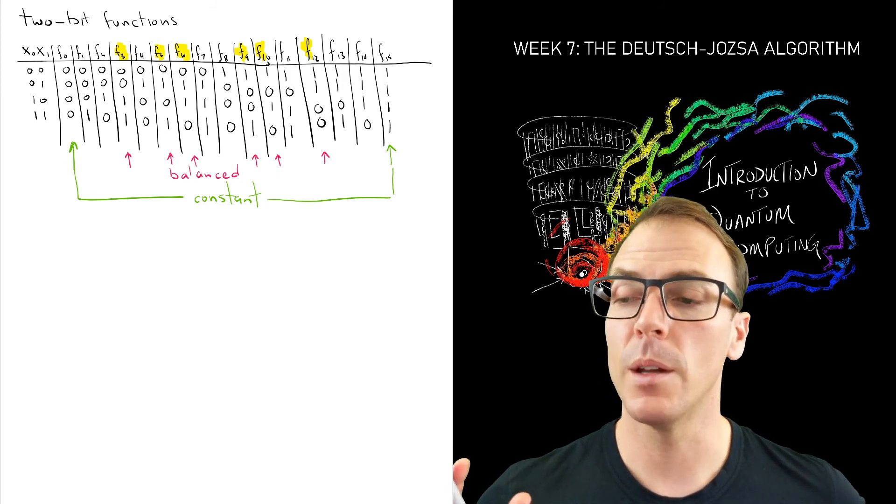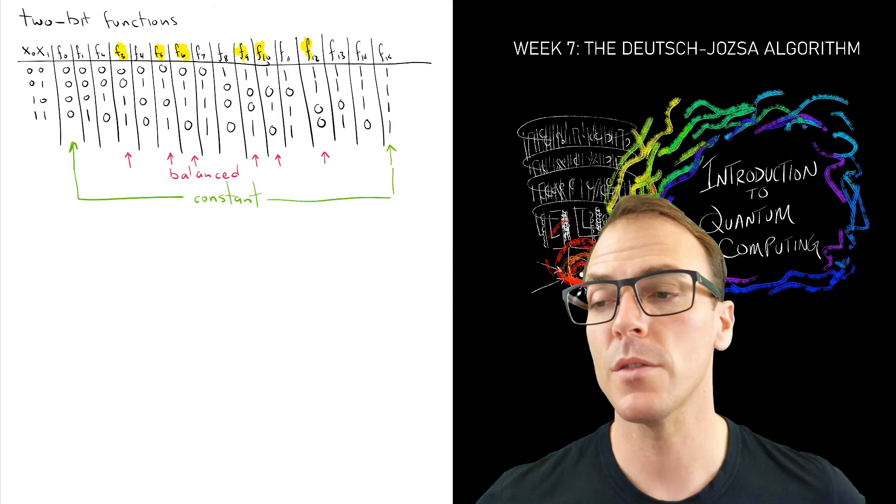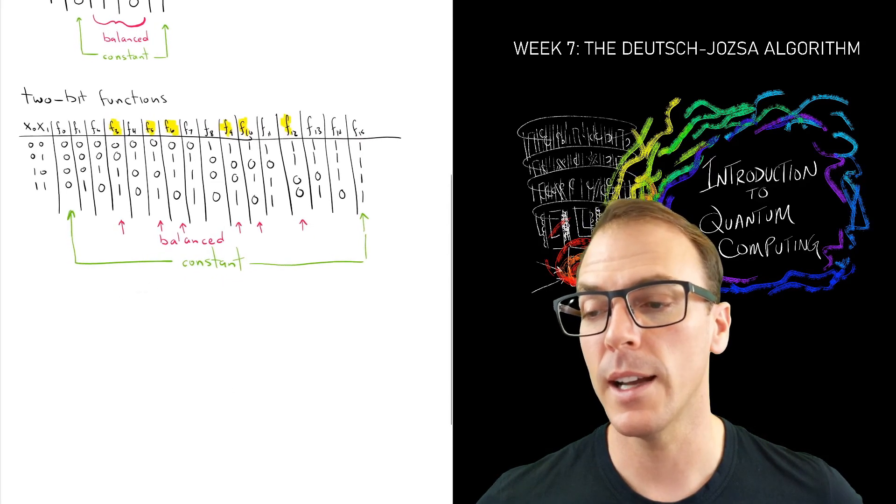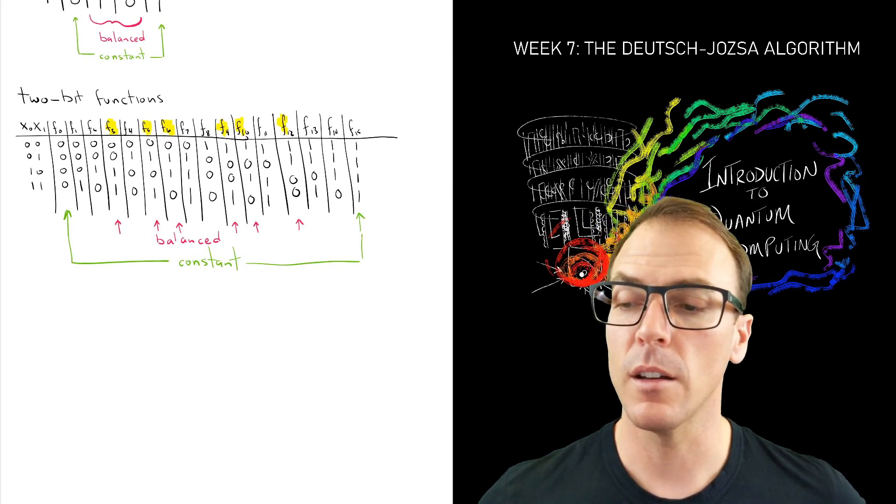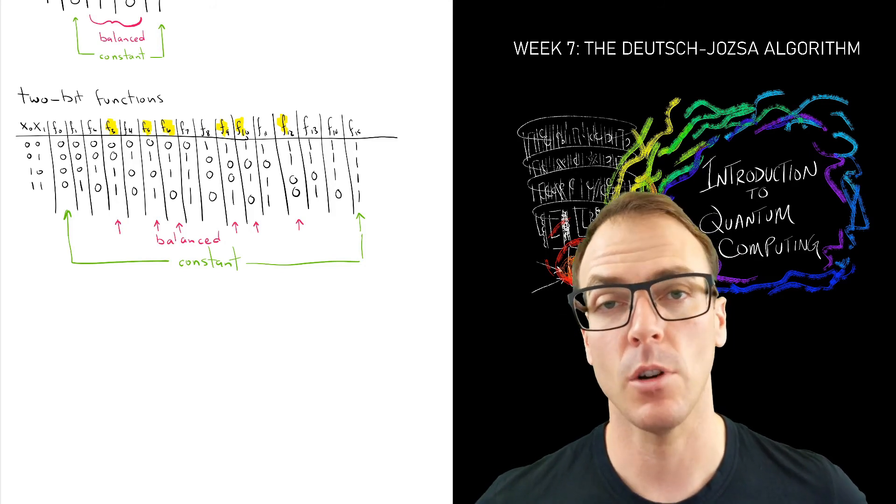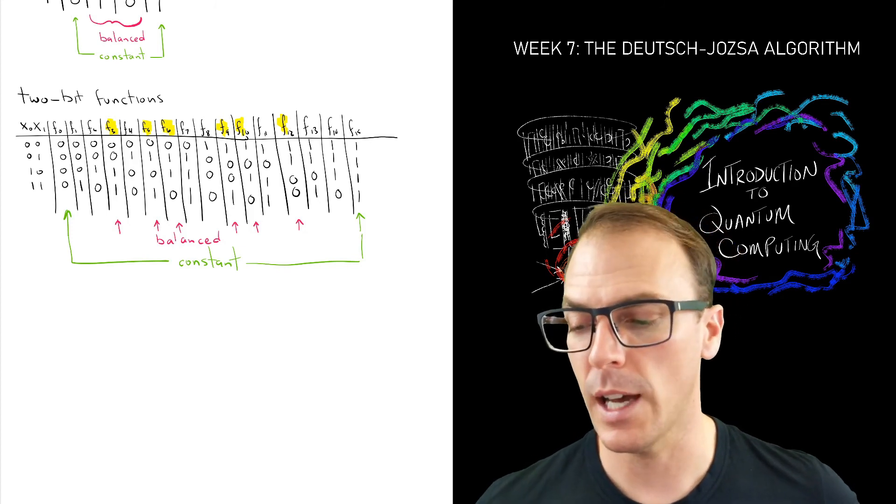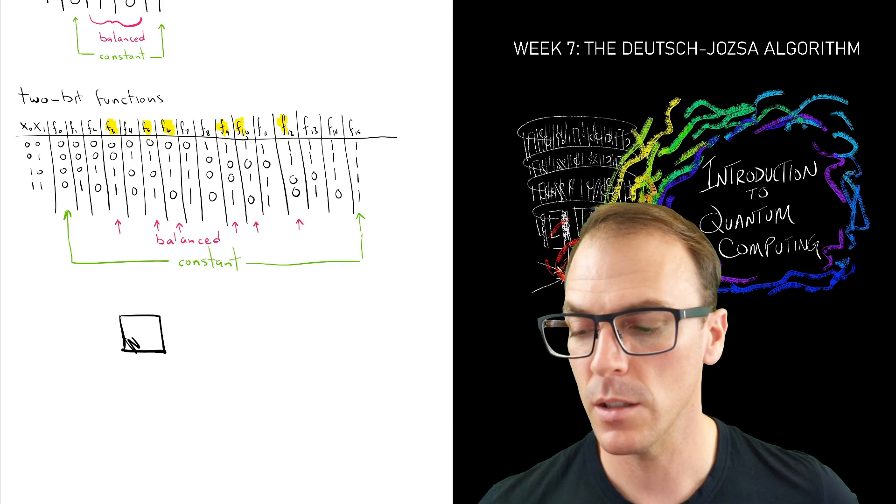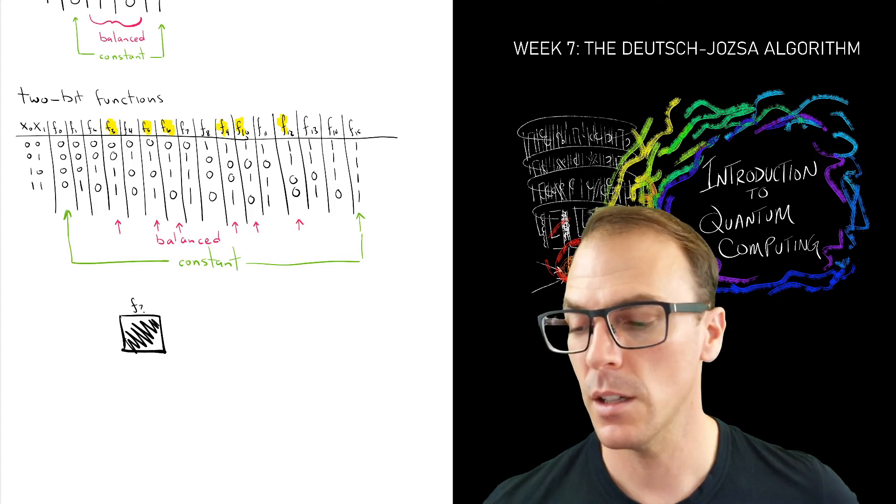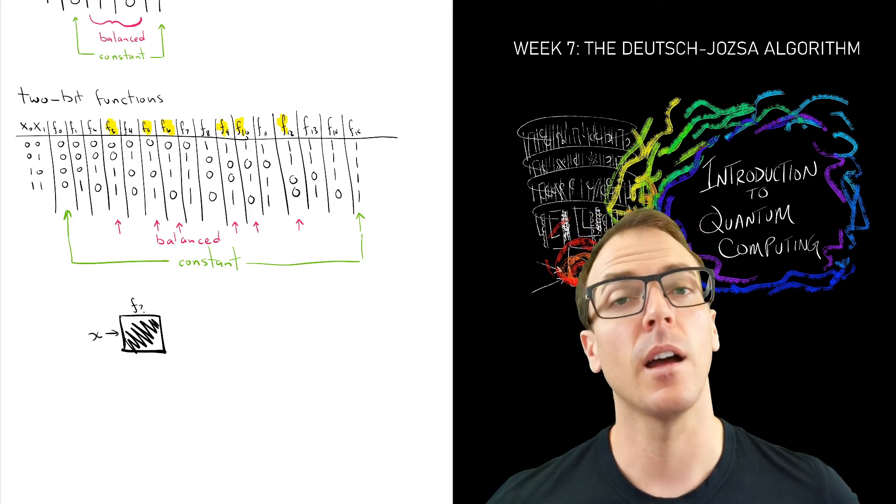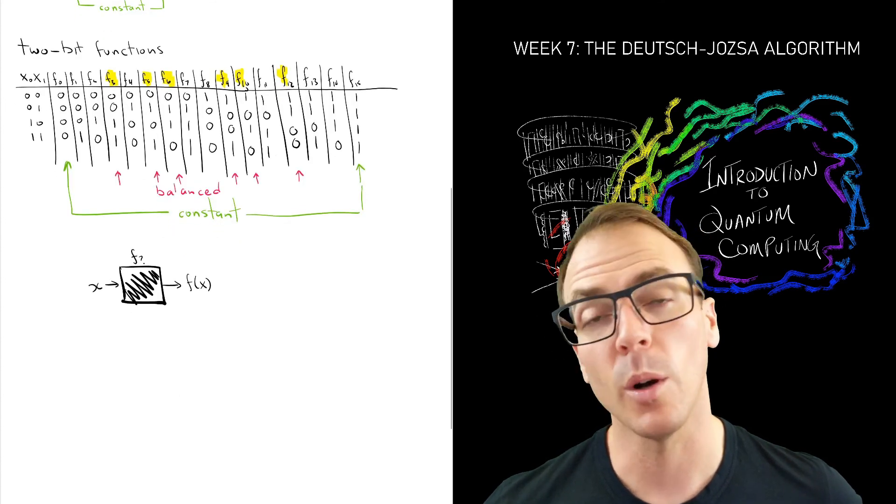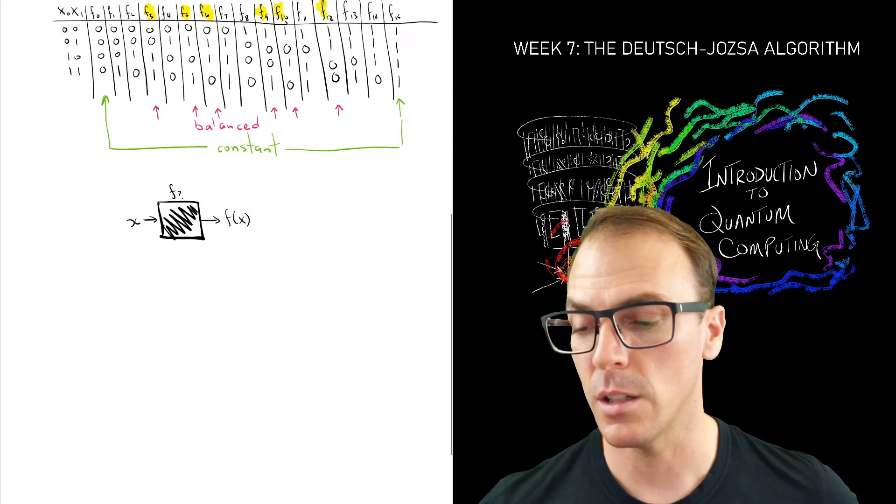So the problem that the Deutsch-Jozsa algorithm solves concerns obviously these types of functions and the idea of asking for the output of a function on a given input and trying to identify the structure of that function. So we imagine that we have this black box. And the black box is implementing some function. We don't know what it is. We can input a bit and find out the output of multiple bits and find out the output of that. And the question becomes, how many queries do I need?